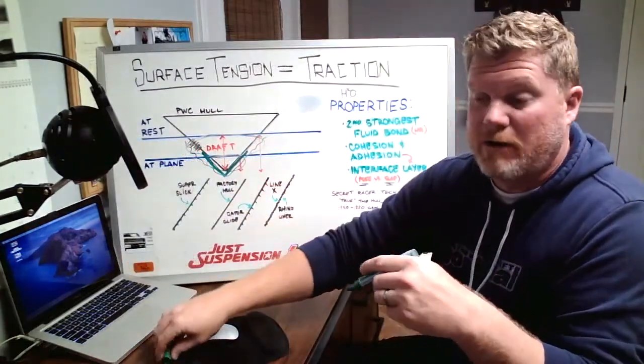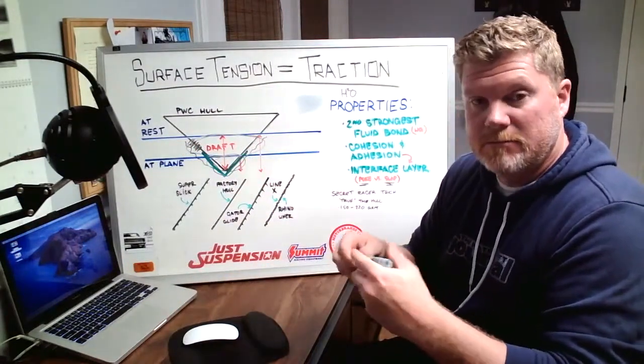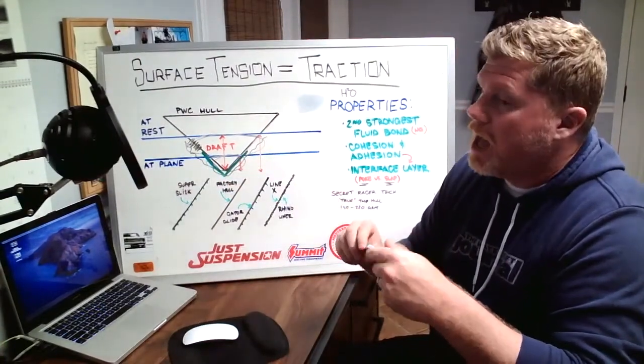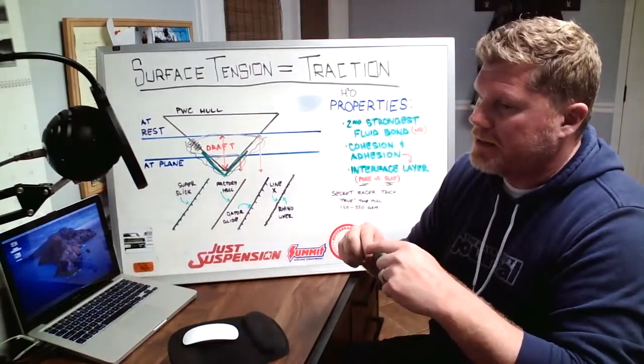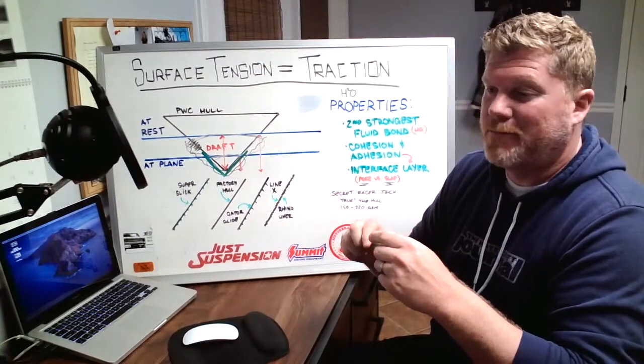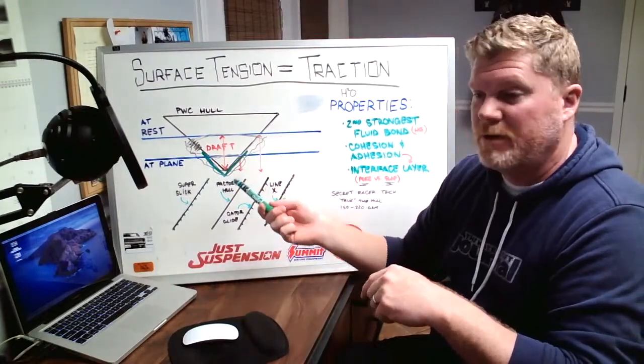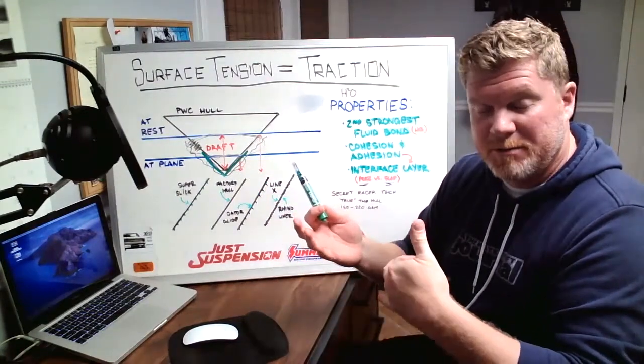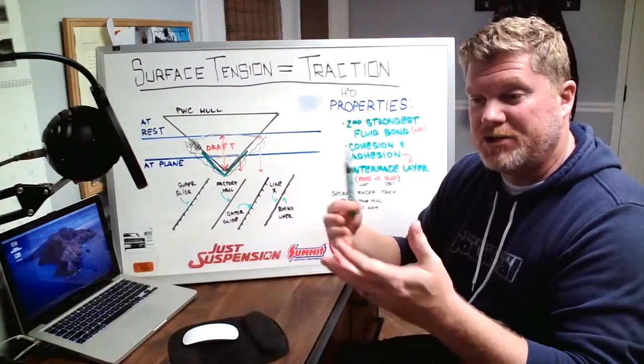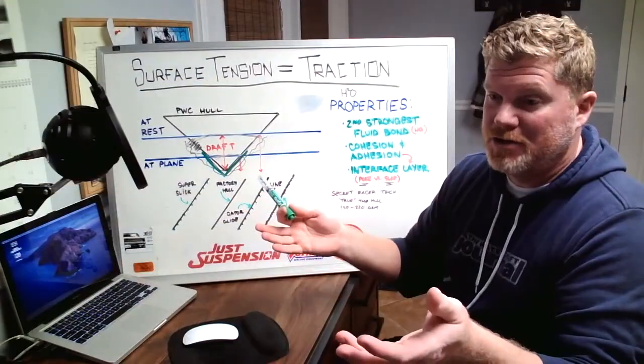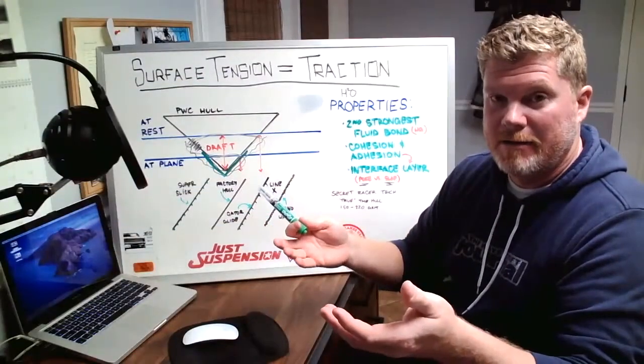For a straight line rider, this actually would speed you up. Not a lot. We're talking fractions of a mile an hour because what it's doing is breaking up surface tension, which in a straight line could effectively give you a little bit of an advantage because you're reducing drag.